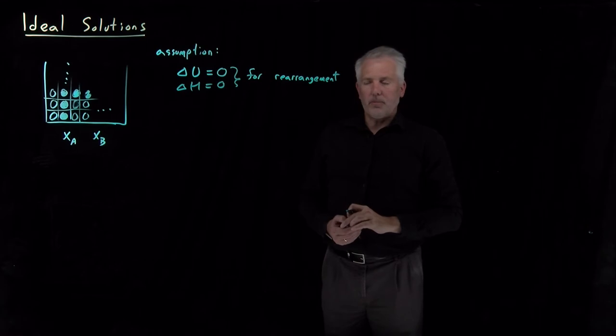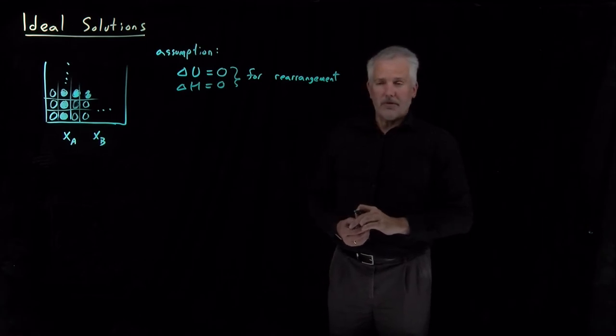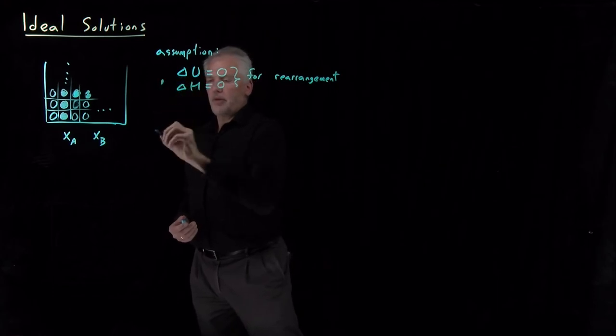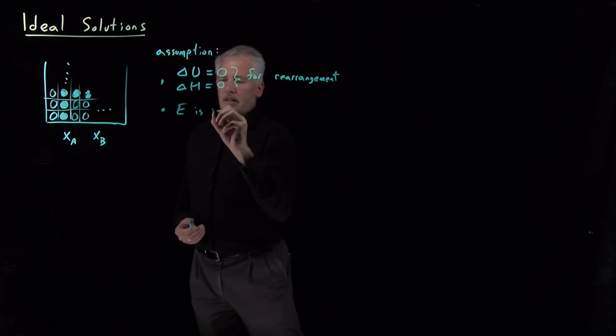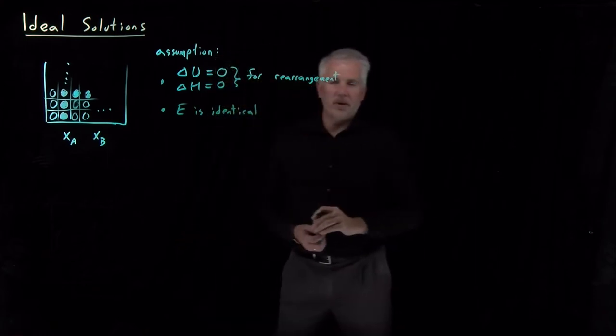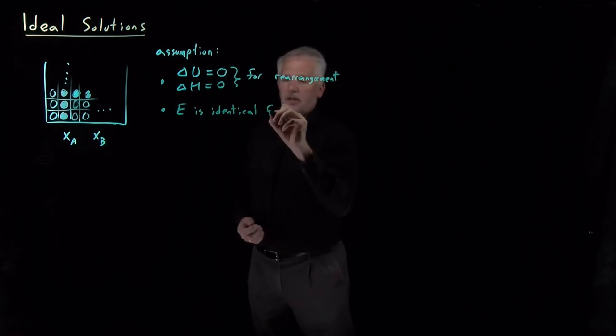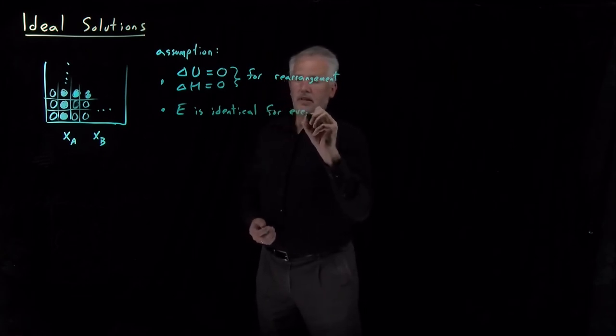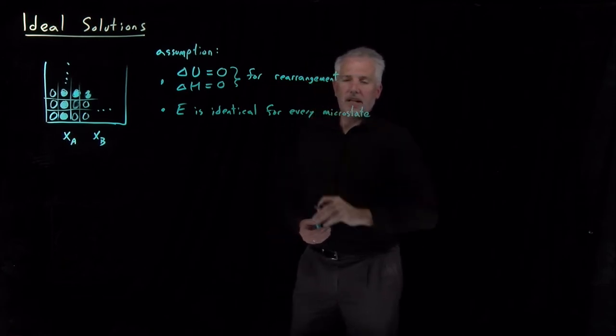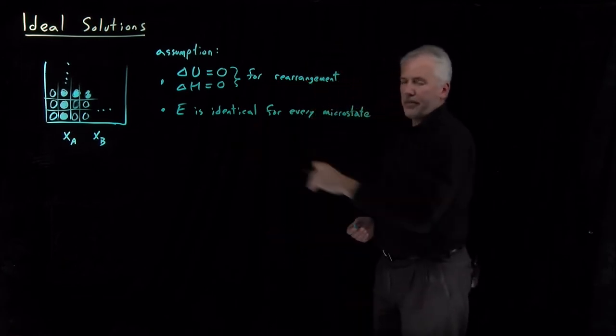If I want to think about it more at the microscopic level, the individual atomistic or molecular level, an equivalent statement to that requirement would be to say the total potential energy of the system is identical for every microstate. Every way I have of placing those molecules down on that lattice model, they all give me the same energy.